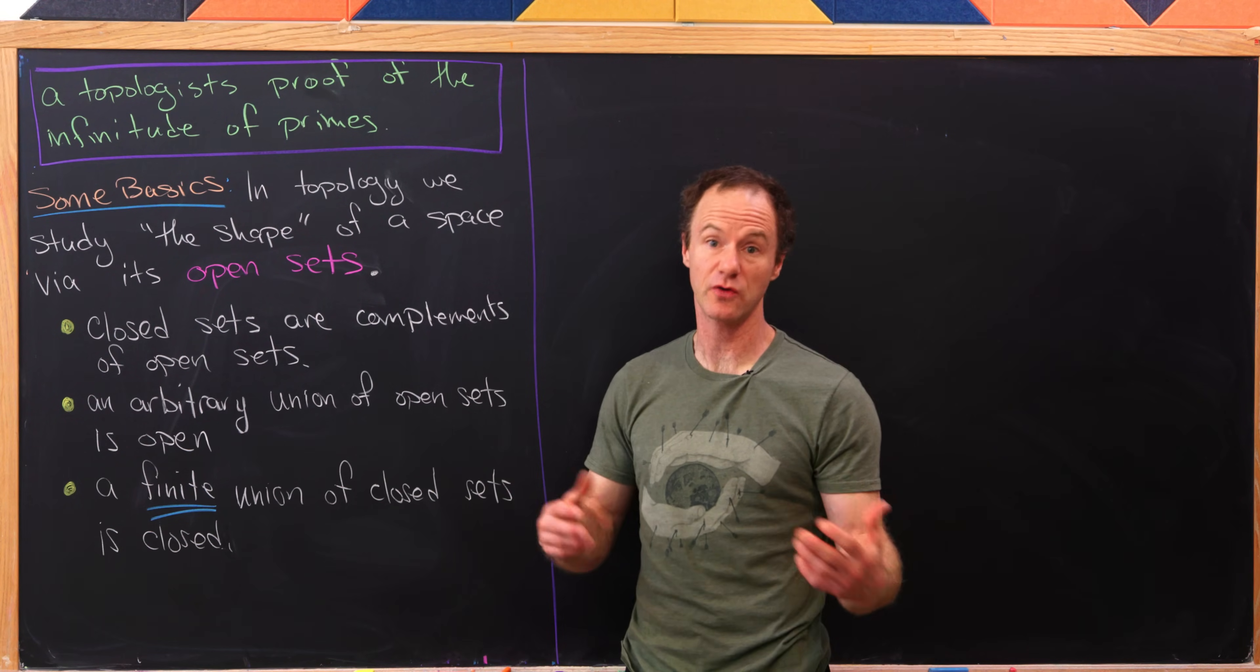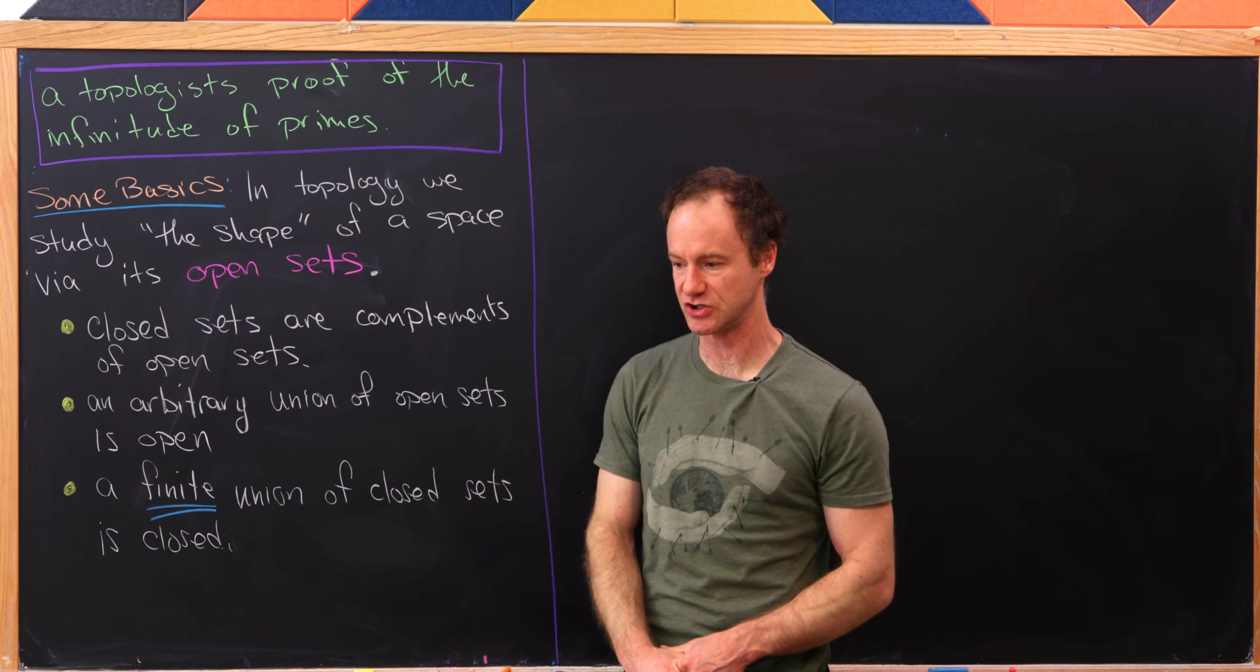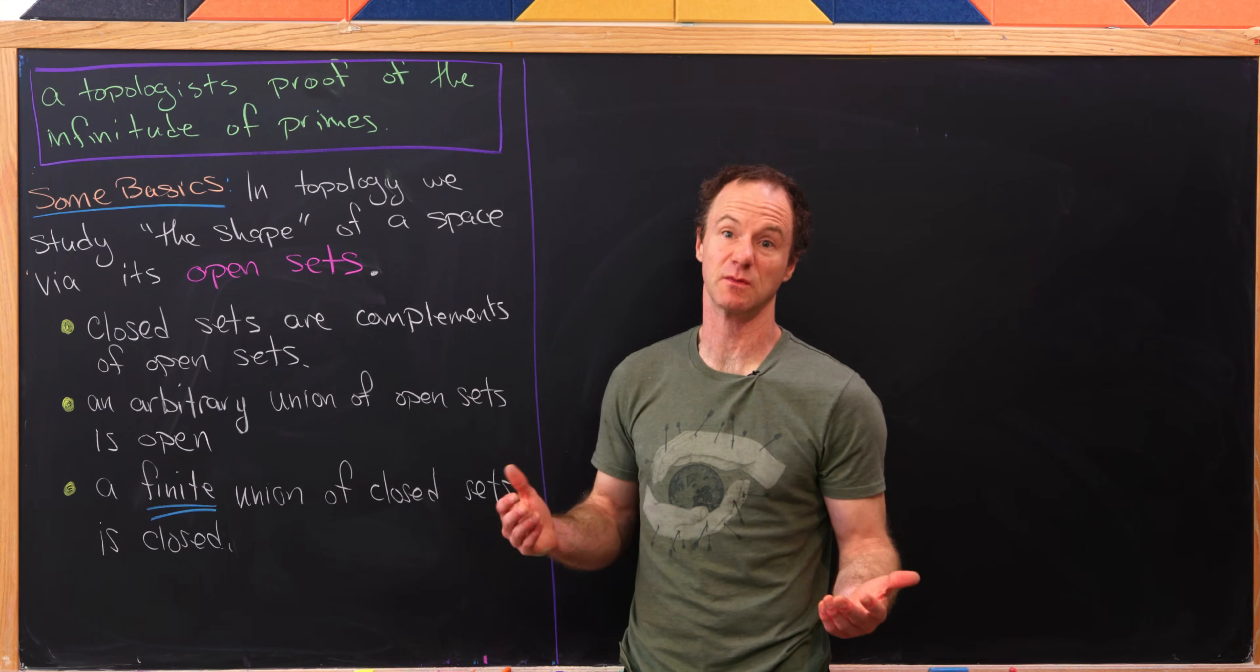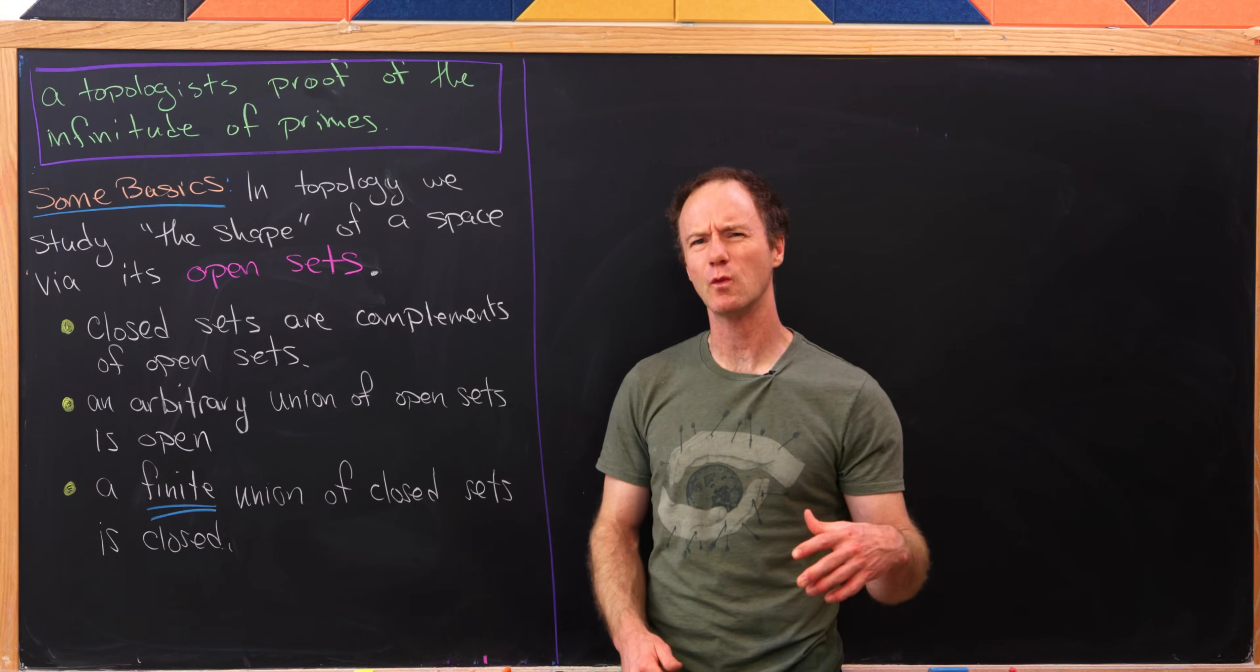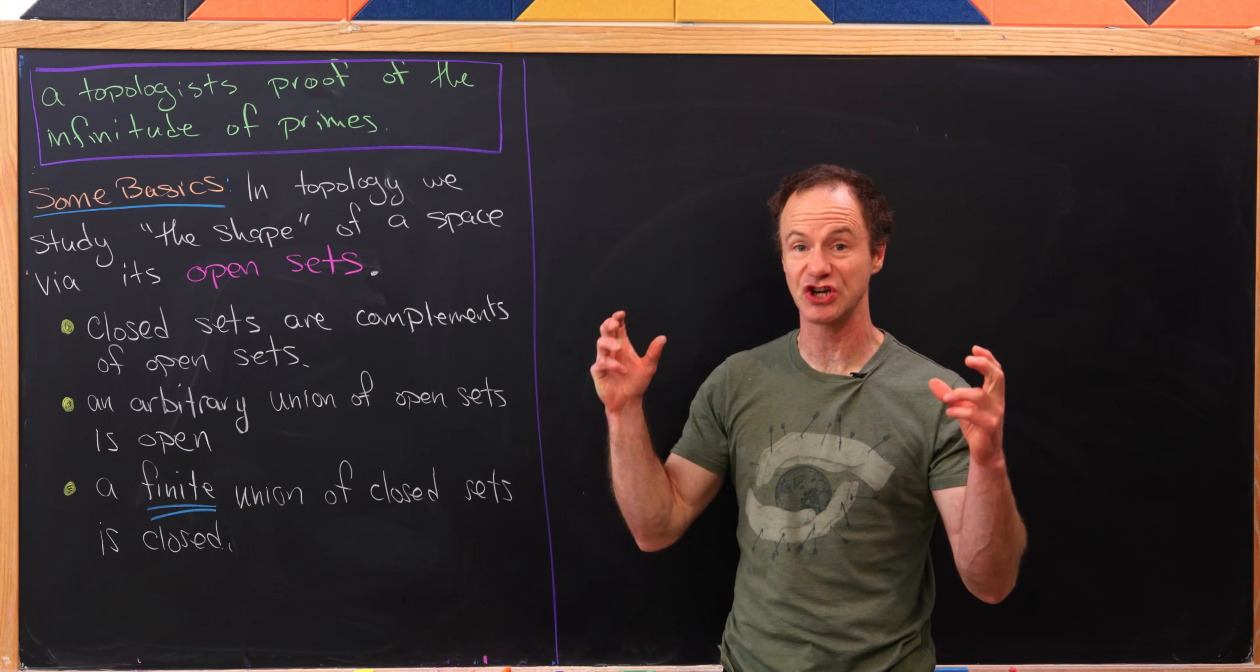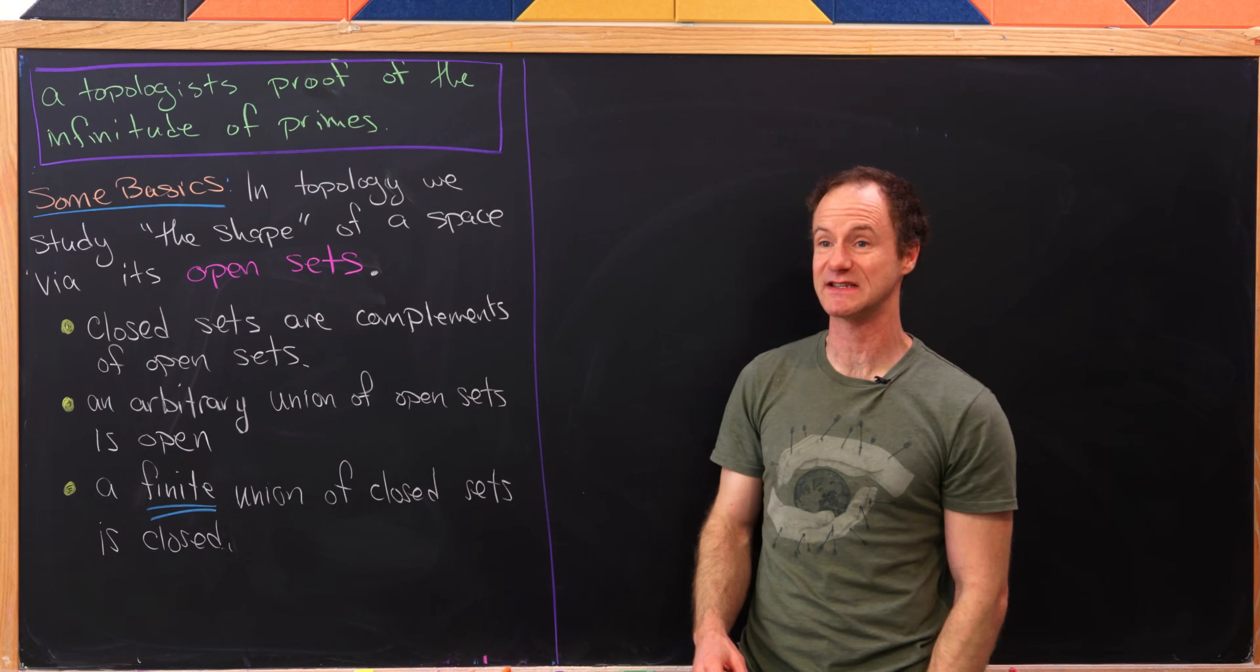But in order to go through this argument, we need some basic ideas of topology. We won't go super in-depth, but after looking at these, you'll be armed to look more deeply into topology if you'd like. So maybe what is topology in the first place? Well, in topology, we study the shape of a space via something called its open sets.